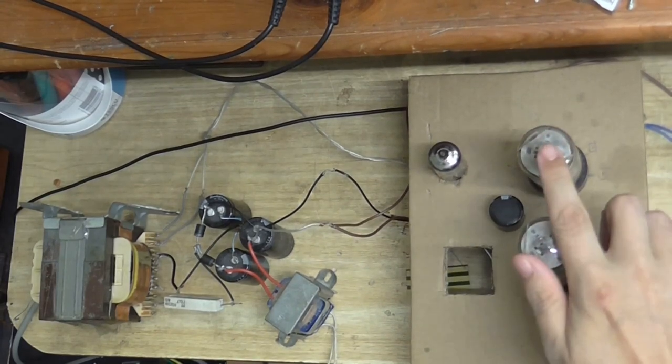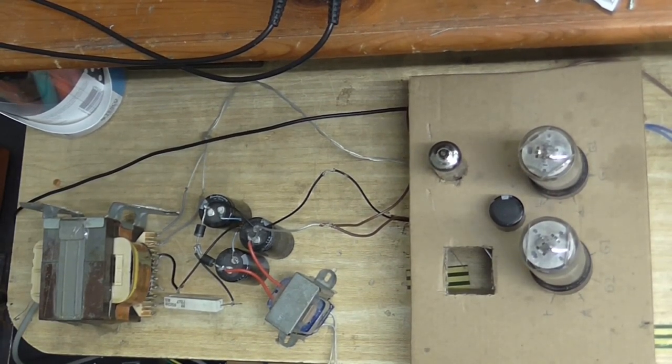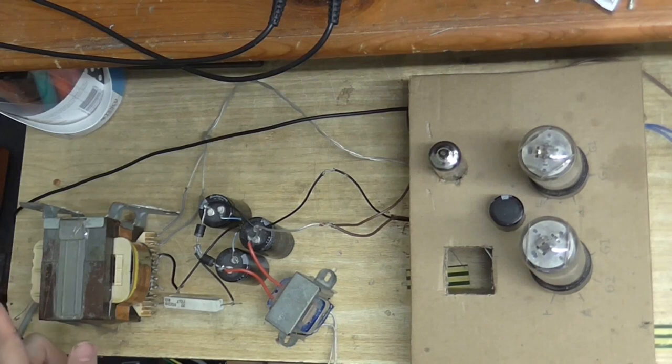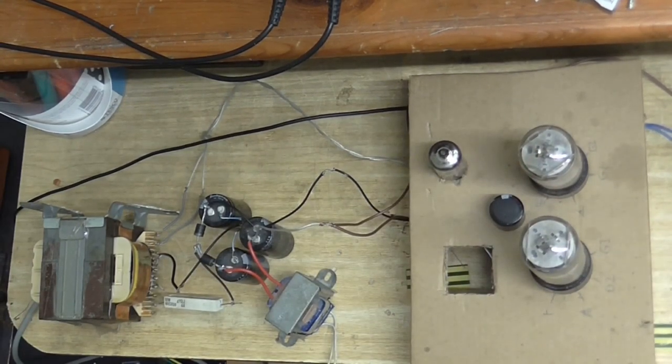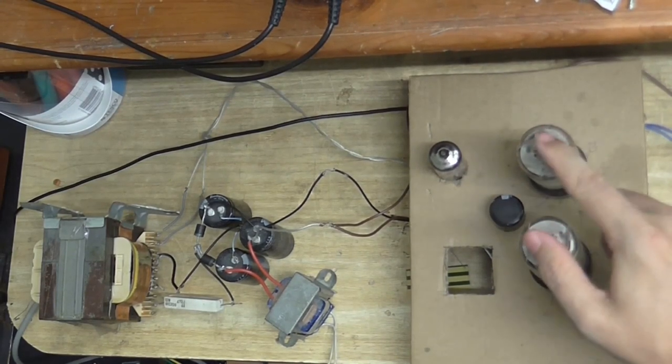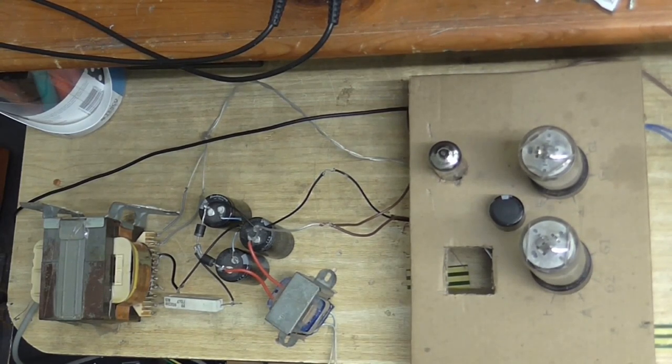Now before we start, I said in the previous video that I might adjust the plate current. Well, I'm not going to do that because I measured the voltage and the current going into this thing. With this particular transformer, when this is all warmed up that pulls the voltage down to about 200 volts.